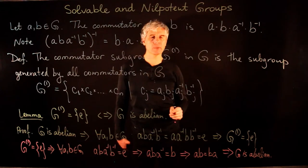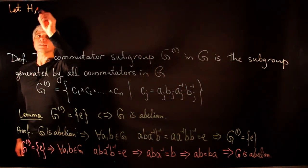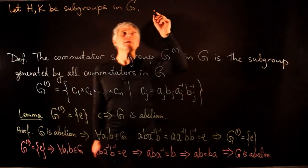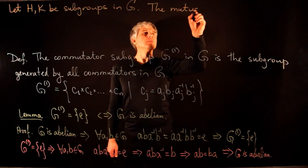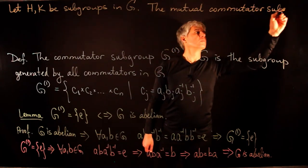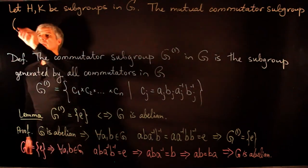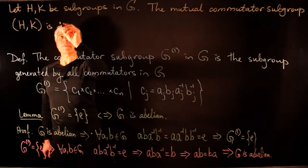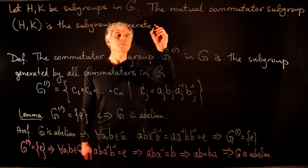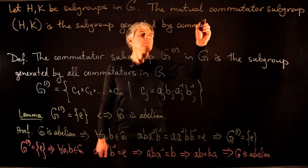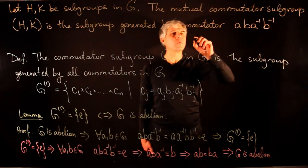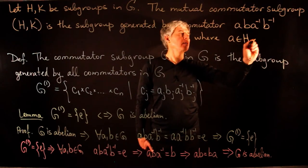The commutator measures the degree of non-commutativity of two elements A and B; for commuting elements the commutator equals identity. Likewise, the commutator subgroup measures the degree to which G is non-abelian; for abelian groups this subgroup is trivial. Now let H and K be two subgroups in G. The mutual commutator subgroup [H, K] is the subgroup generated by commutators ABA⁻¹B⁻¹ where A is in H and B is in K.